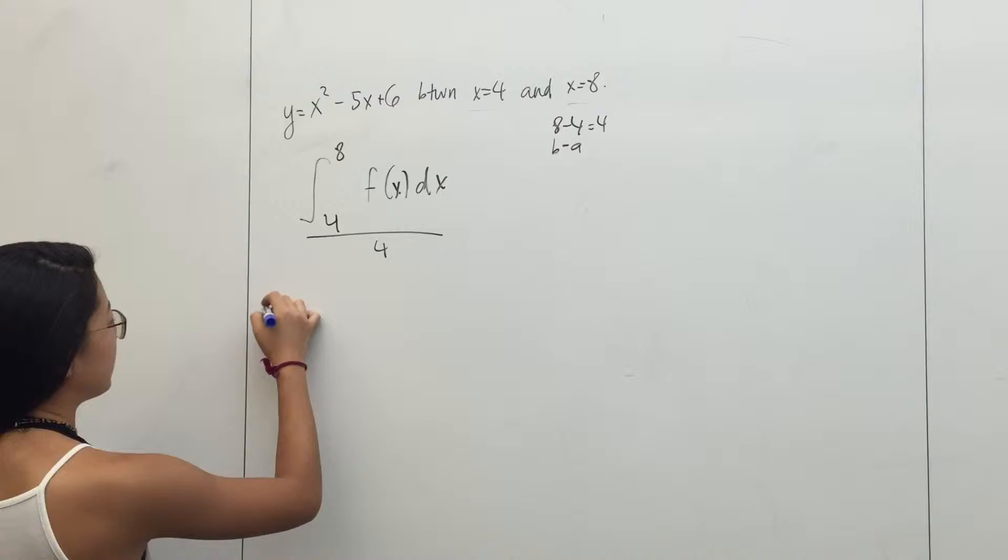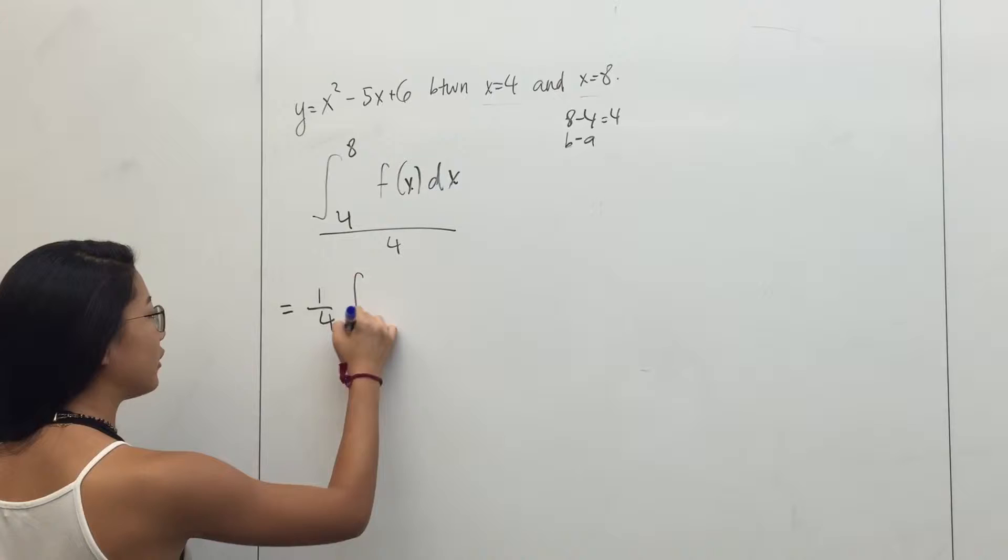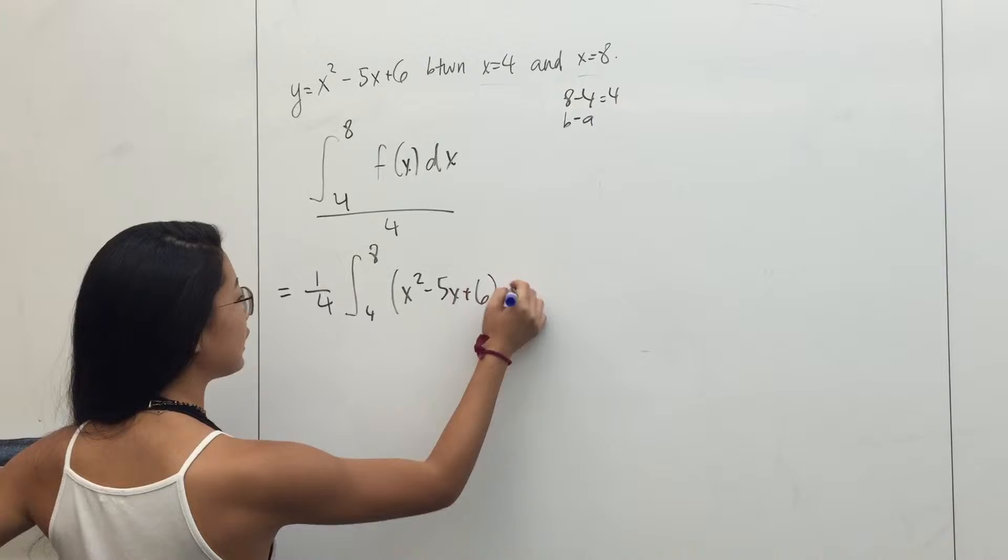And this is also b. So then, let's rewrite that as we're going to take the 1 fourth outside the integral, 4 to 8. So f of x squared minus 5x plus 6 times dx.